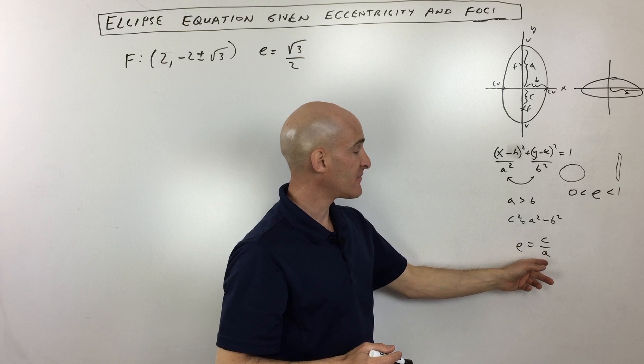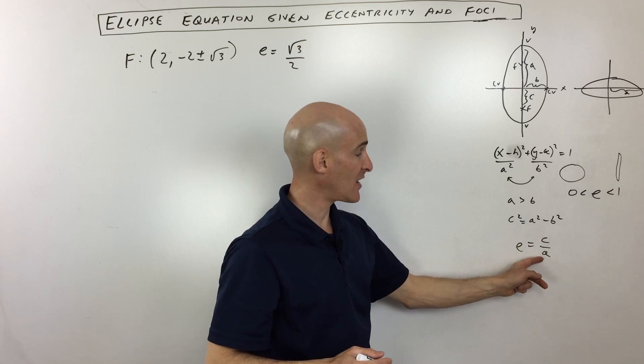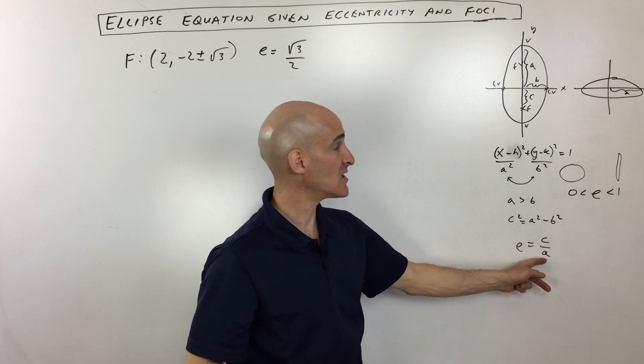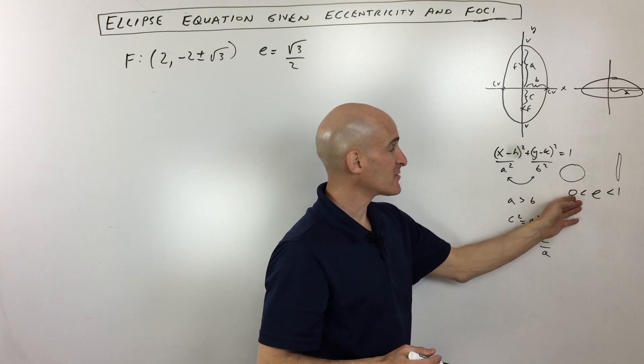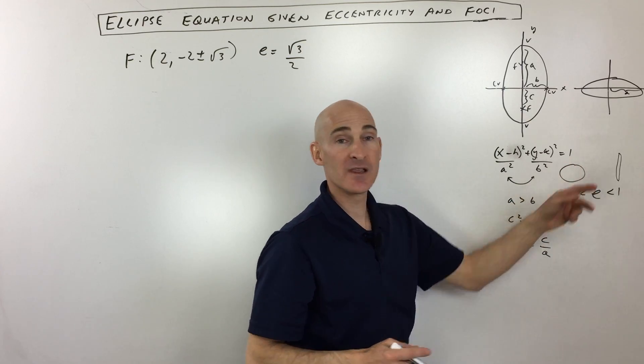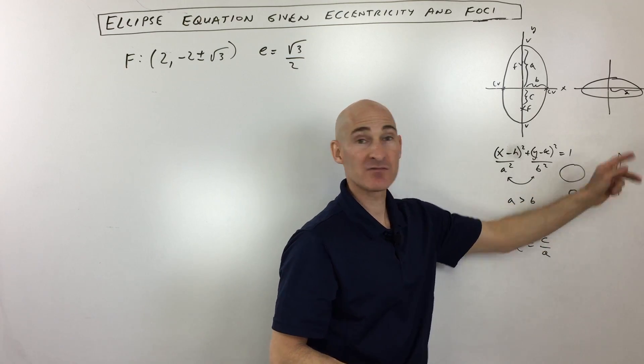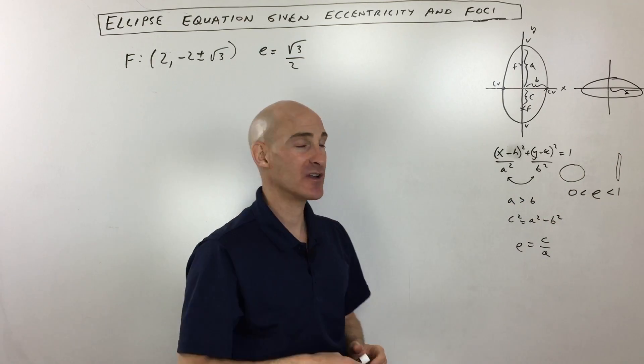And then the eccentricity is defined as C divided by A, meaning the distance from the center to the foci divided by the distance from the center to the vertices. And eccentricity is always between 0 and 1. Remember, the closer it gets to 0, the more that the ellipse looks like a 0 or a circle. And the closer that it gets to 1, the more it looks kind of like the number 1, stretched out and narrow.